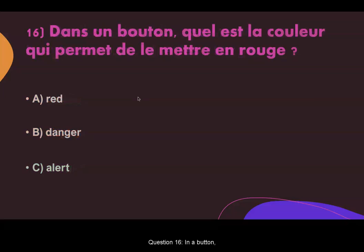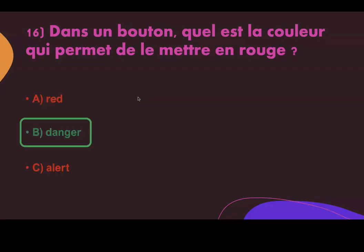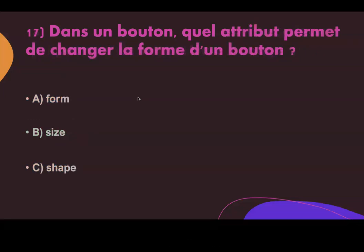Question sixteen. On a button, what color makes it red? Answer A: red. Answer B: danger. Answer C: alert. The correct answer is B, danger.